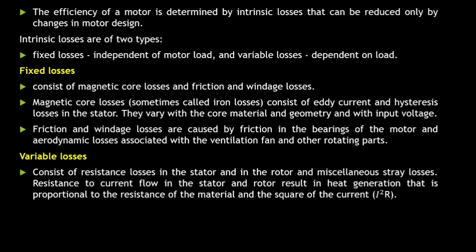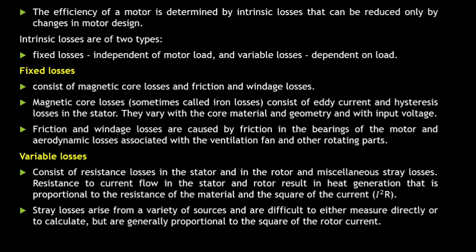Then there are variable losses. Variable losses is basically in the stator and rotor, and there are miscellaneous stray losses also. Now we all know that variable losses are the I²R losses, so square of current into resistance will give you these losses. I²R losses are also known as the variable losses. Now there are stray losses also which comes under the category of variable losses. These stray losses come from a variety of sources and are difficult to measure. The stray losses are difficult to directly measure or calculate, and it is generally proportional to the square of the rotor current.